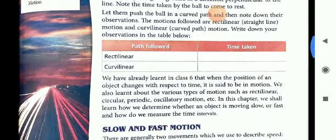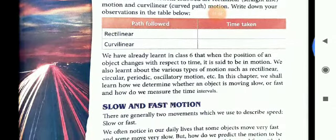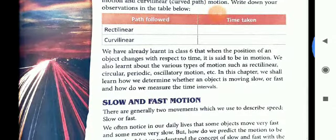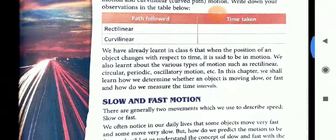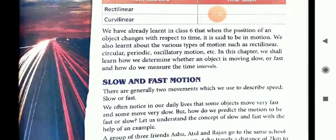See the time taken and the distance covered by the ball. So what you have to observe is the time taken in rectilinear path and in curvilinear path both. So the object changes with respect to time and this is known as motion.